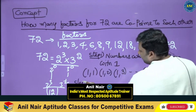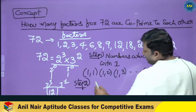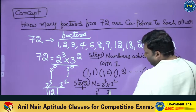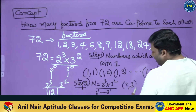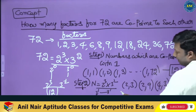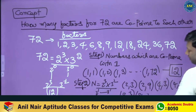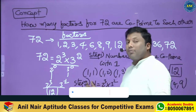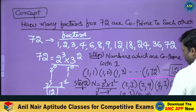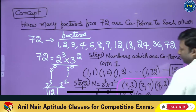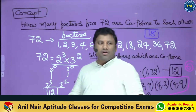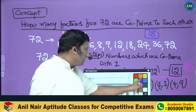So totally here we got 12 from step 1. Step number 2: 72 is 2 power 3 into 3 square. Every power of 2 (2¹, 2², 2³) is co-prime with every power of 3 (3¹, 3²). So 2 is co-prime with 3, 4 is co-prime with 9, 8 is co-prime with 3, 8 is co-prime with 9 — that's 3 times 2 = 6 cases. So totally 12 plus 6 = 18 cases. How many factors of 72 are co-prime to each other? Total it is 18.